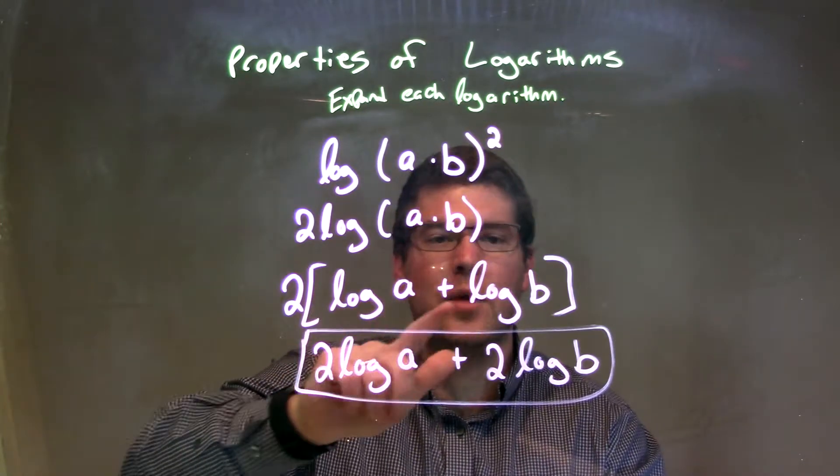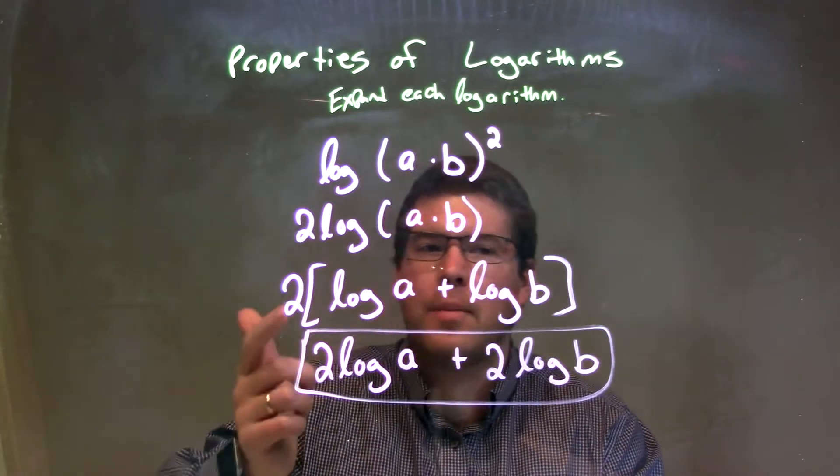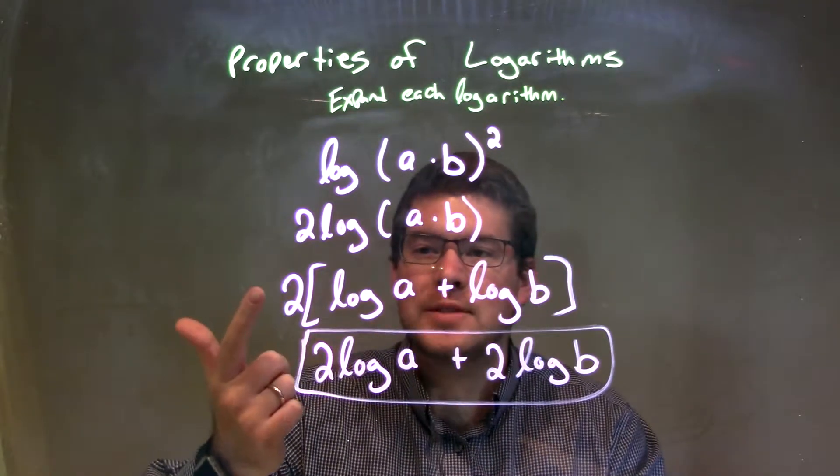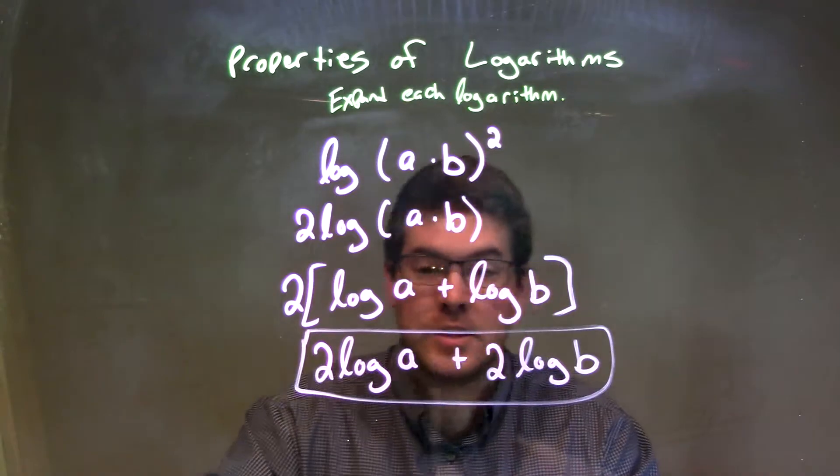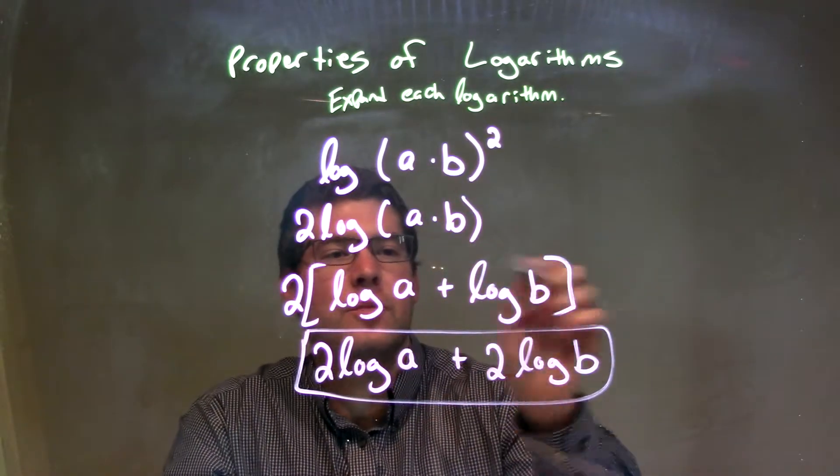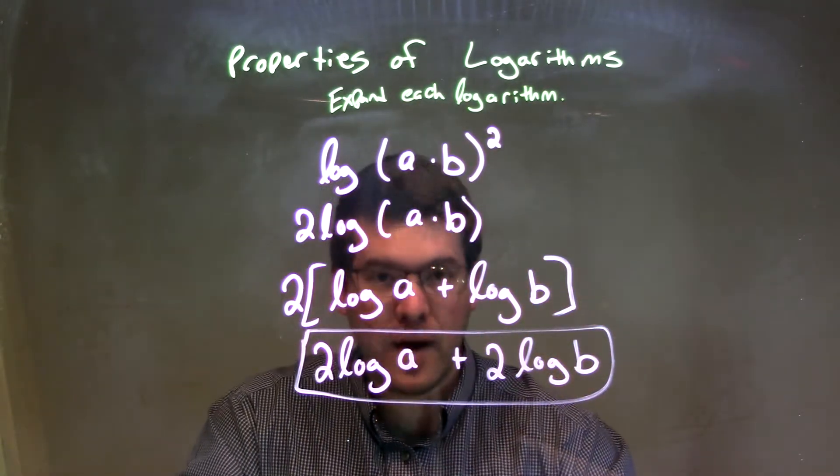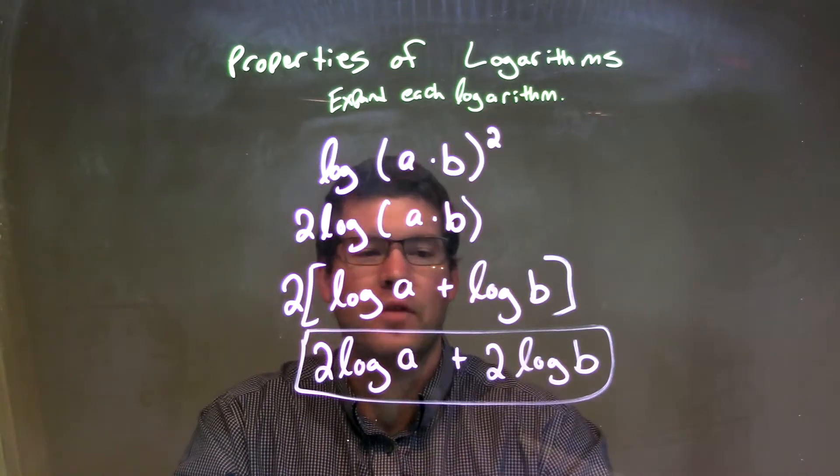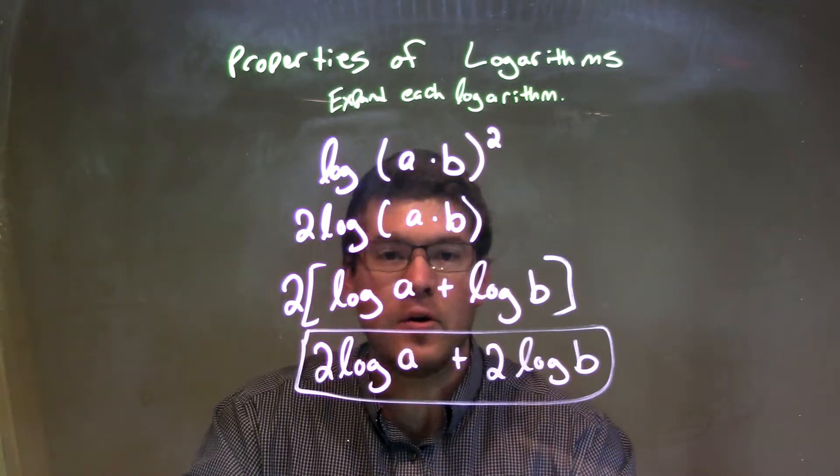Now, I put my brackets there showing that the 2 still needs to be multiplied to both parts, which it does. And then we distribute that 2 to both parts, giving me my final answer of 2 log of a plus 2 log of b.